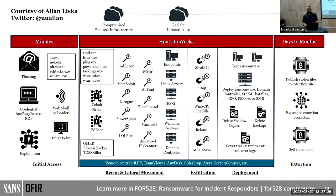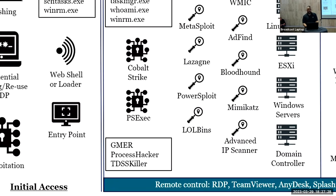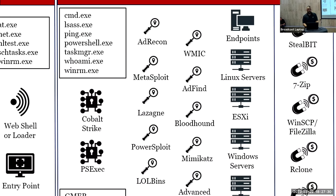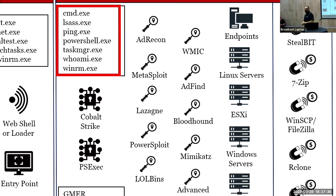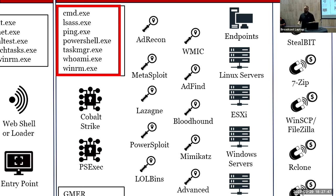Once they get into the environment, they try to deploy tooling that will help them. One of the things they like to do is use tools already in the environment — we call those Living off the Land Binaries and Scripts, or LOLBins. You can go to lolbas-project.github.io to learn more about that project.